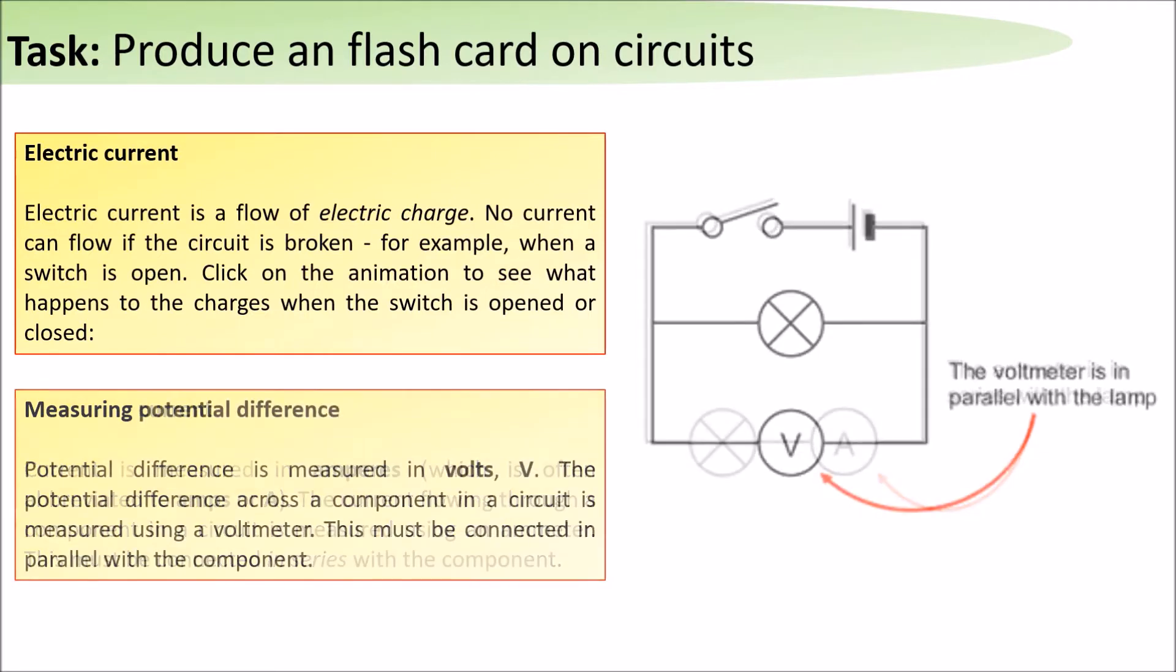Potential difference is measured in volts. A voltmeter must be connected in parallel to the component that you want to measure the voltage of.